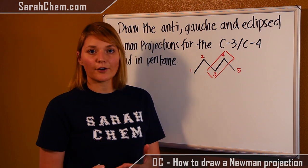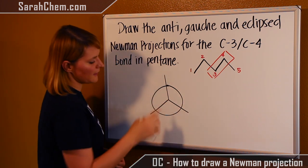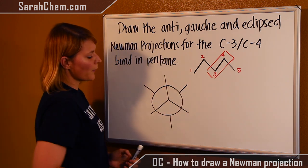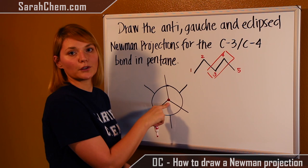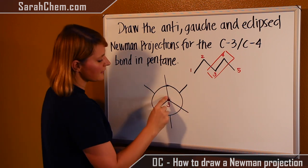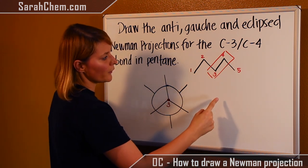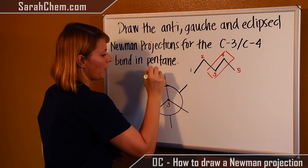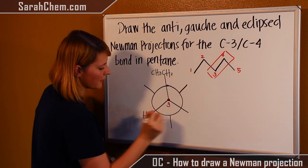The anti-conformation is a type of staggered conformer. What we do is draw a circle, then draw a line that segments into three separate areas representing the front carbon, and then directly behind it, three more line segments for the back carbon. This front point is always the first carbon in the bond we're looking at — so because we're looking at C3 and C4, this represents the third carbon. These lines represent the substituents attached to that carbon. Carbon 3 has two hydrogens and an ethyl group, so I'll place the ethyl on one point and the two hydrogens on the other two points.